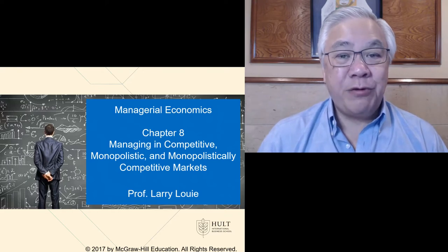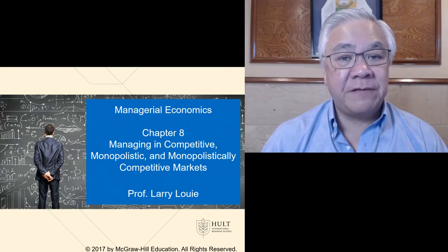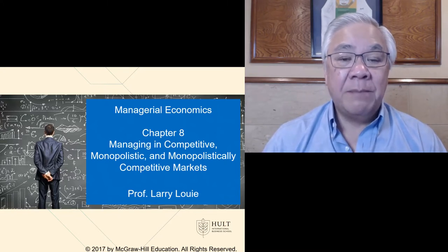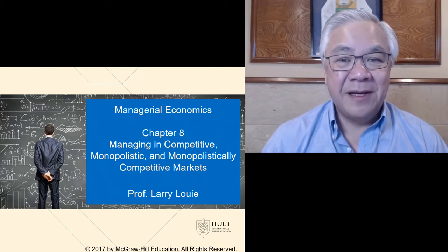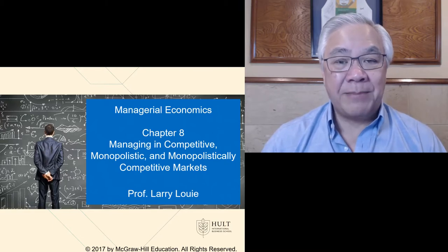Chapter 8 covers what we previewed in the last chapter, namely how do competitors behave in different industry types. The three we're going to look at specifically are competitive, monopolistic, and monopolistically competitive. The one we're not covering today, but we'll cover in our next chapter, is oligopoly.